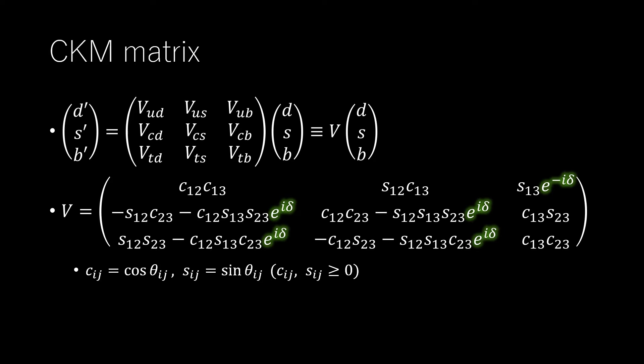The CKM matrix can be parameterized by just four quantities: three mixing angles and one phase angle, and is conveniently written in the standard form.